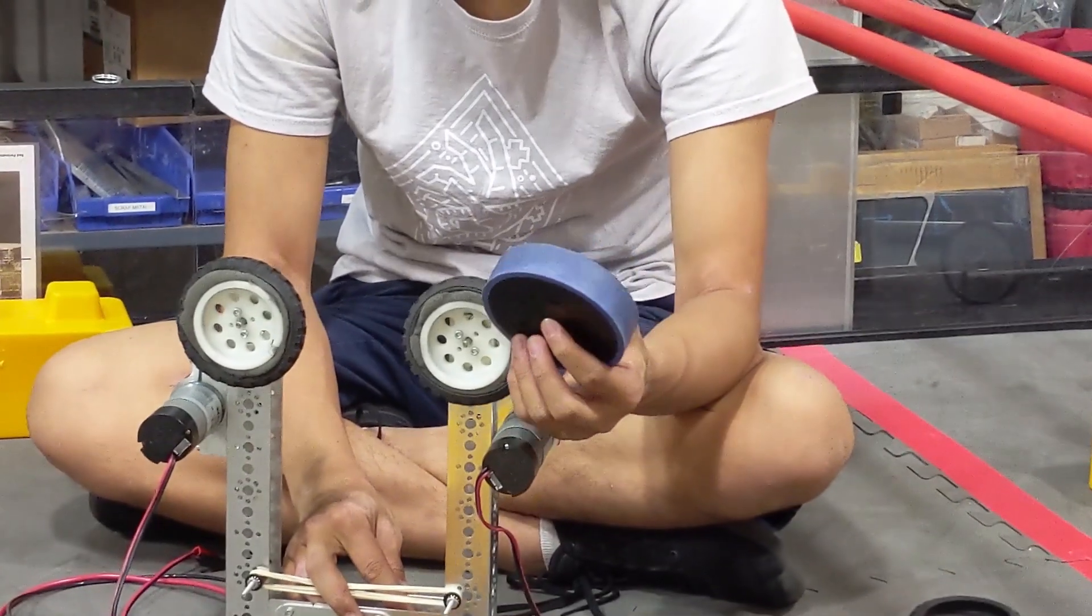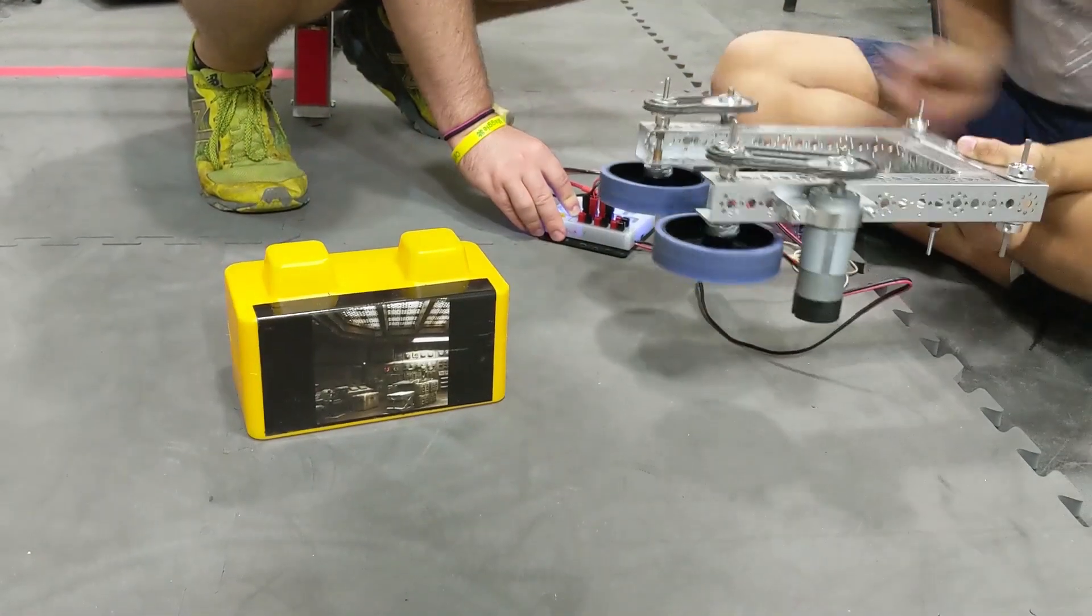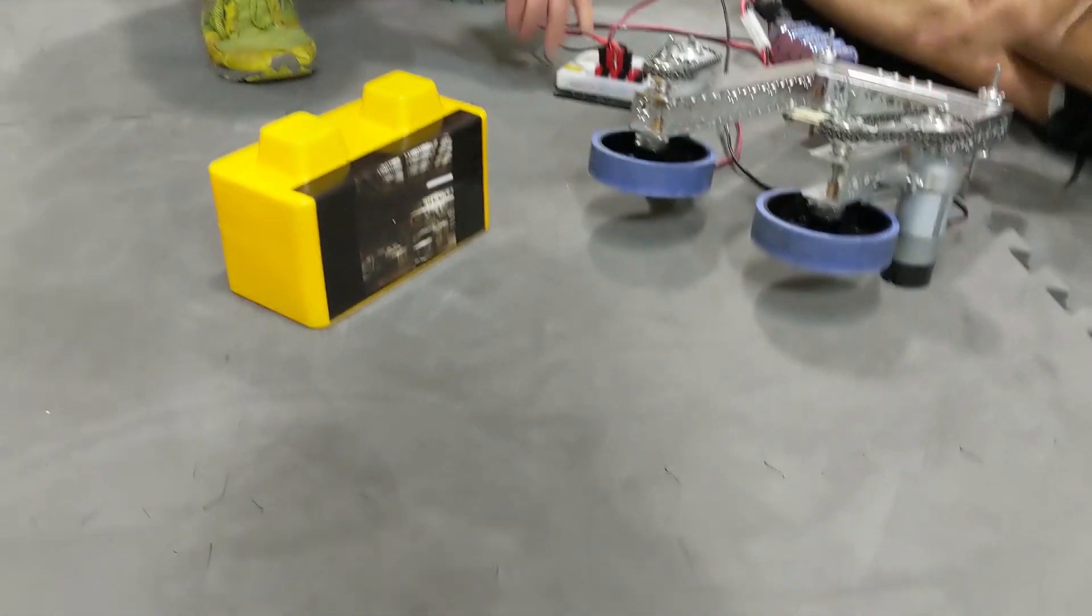So we changed to a four-inch stealth wheel instead. And here we found that without compliance, it was really easy for the block to just skid along the outside of the wheel without actually getting pulled in.